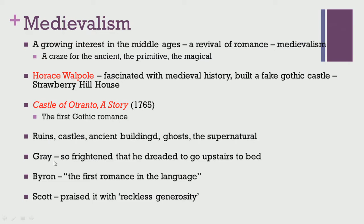Gothic romance was a recreation of earlier medieval romances. The integral elements included ruins, castles, ancient buildings, ghosts, supernatural elements, and everything relating to medieval times and the romantic stories of those times. 'The Castle of Otranto' was immensely popular and received rave reviews from contemporaries and major 19th century romantic writers. Gray was so frightened by it that he dreaded going upstairs to bed, Byron praised it as the first romance in the language, and Scott praised it with reckless generosity.